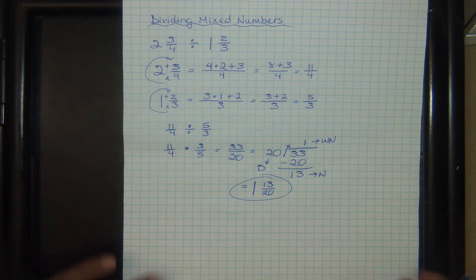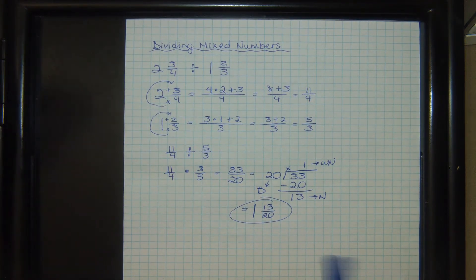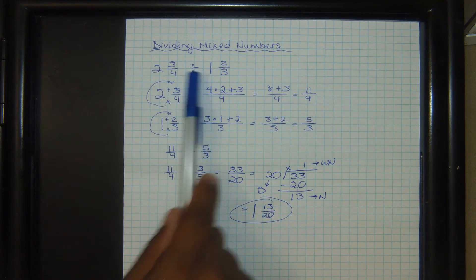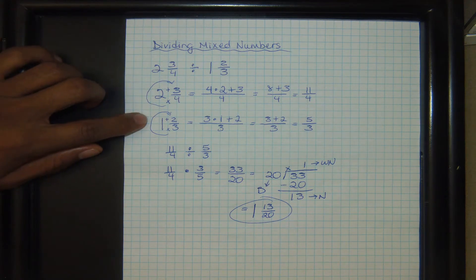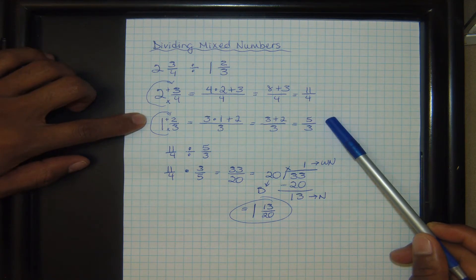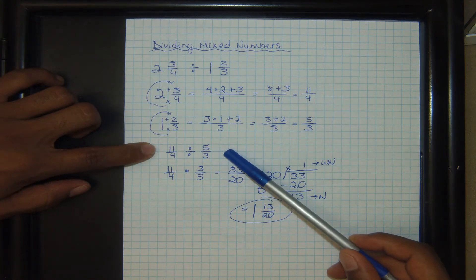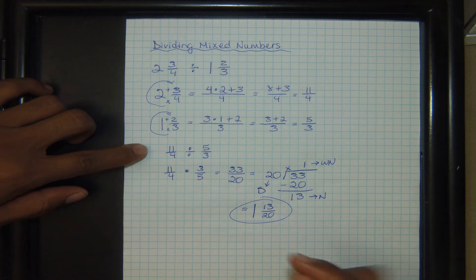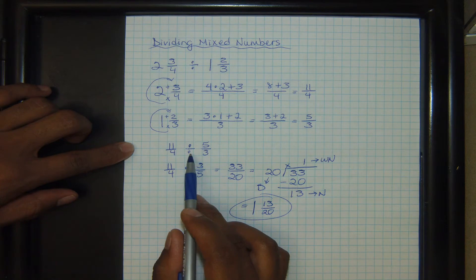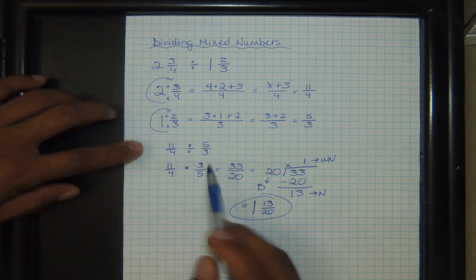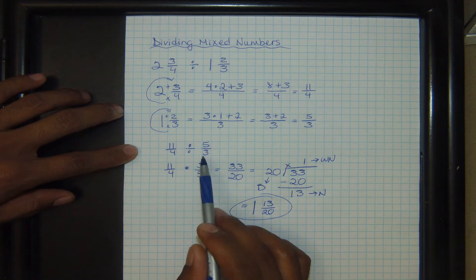So, one more time. When dividing mixed numbers, we have to change both of those mixed numbers to improper fractions. Once we change them to improper fractions, we rewrite the problem. And after we rewrite it, since we're dividing, dividing fractions means to multiply by the reciprocal. So we change division to multiplication.